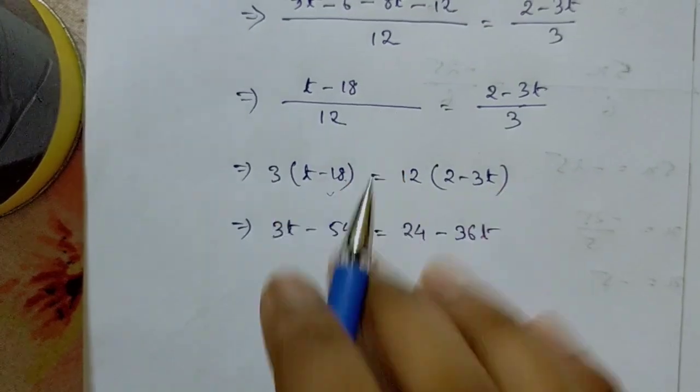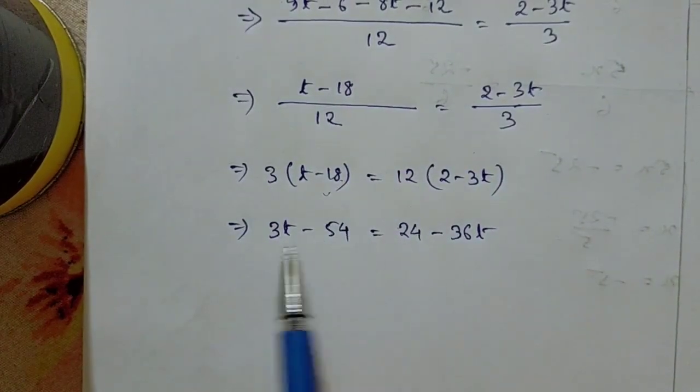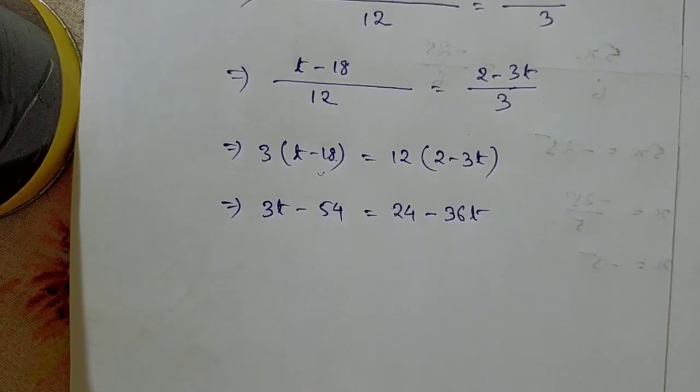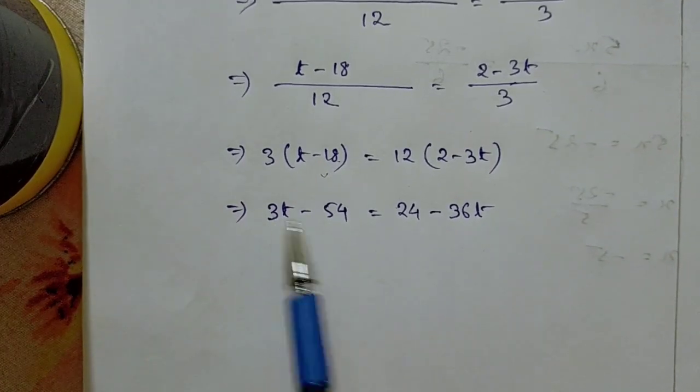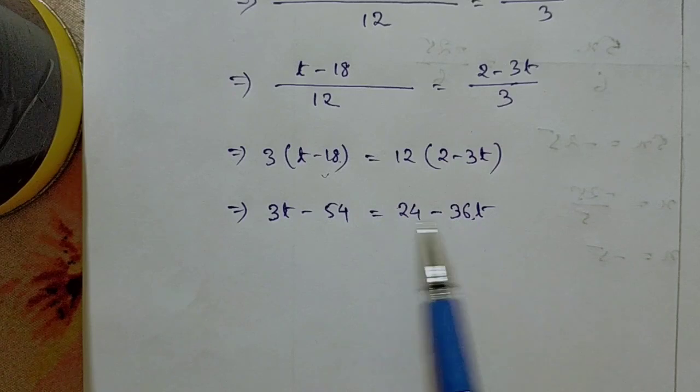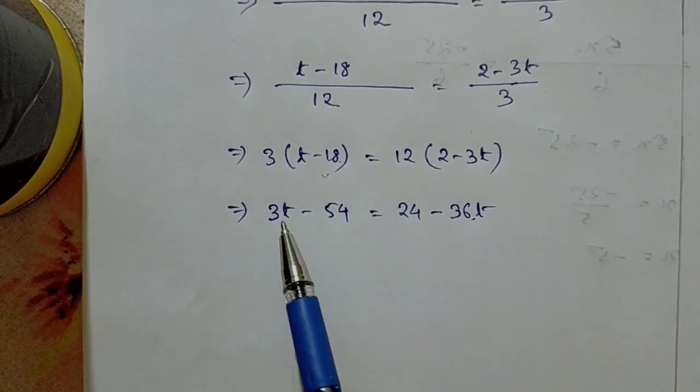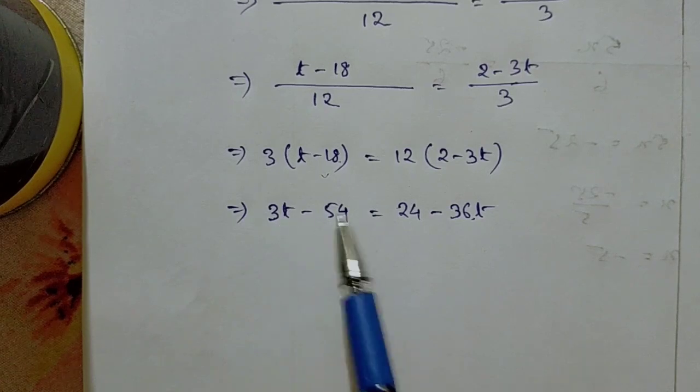Now this equation looks somewhat familiar. We have two variable terms and two constant terms. So what we can do is bring the variable terms on one side and the constant terms on the other side. This is our simplified form.